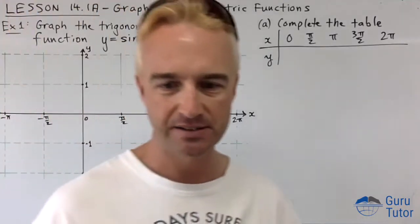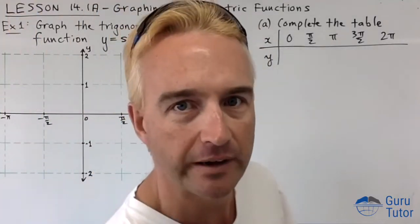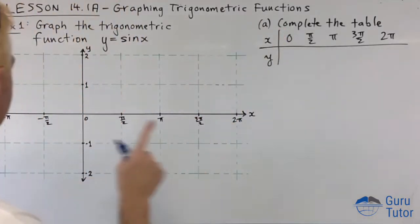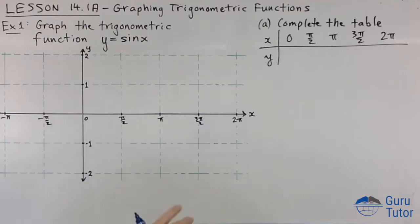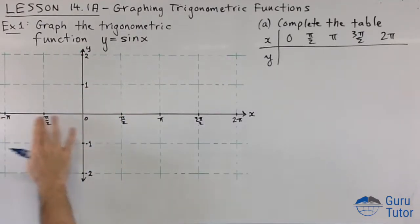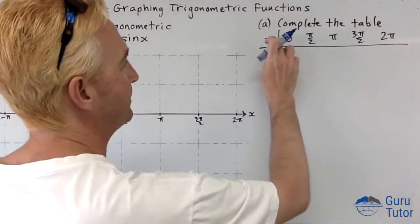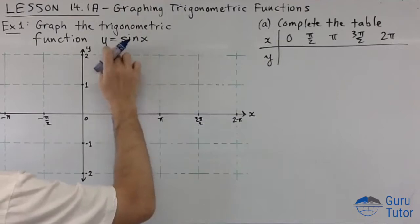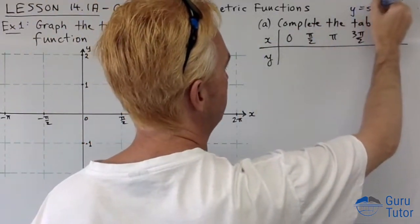We're graphing y equals sin x. I'm going to lead you through it. Part A: complete the table of values. Here we have our x and y coordinate plane. The y values are just regular real numbers, but the x values are angles in radians. We generally stick with radians when doing trigonometric functions and their graphs. We have a bunch of input values and the y will be output values. We're thinking about y equals sin x.